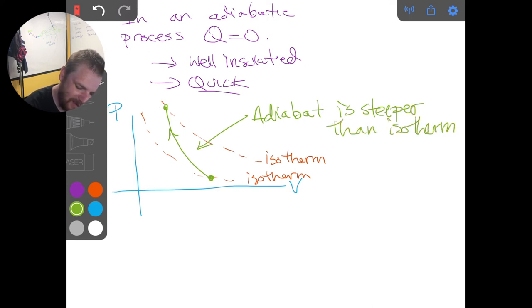We're not expected to recognize the adiabatic sort of in isolation without any context, but if you have an isotherm and there's another curved process on that plot, you can safely assume that it's adiabatic.